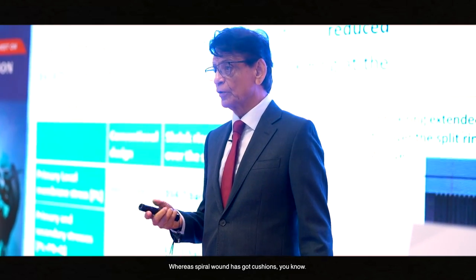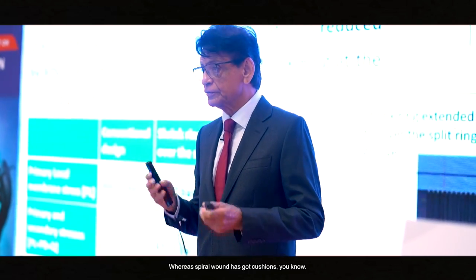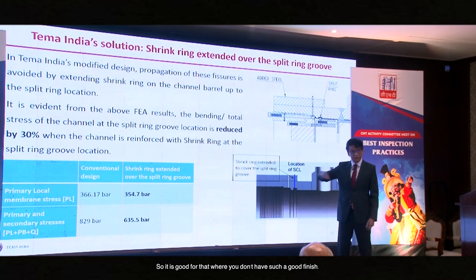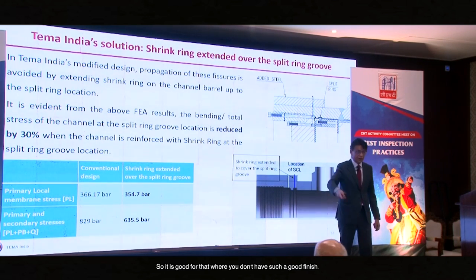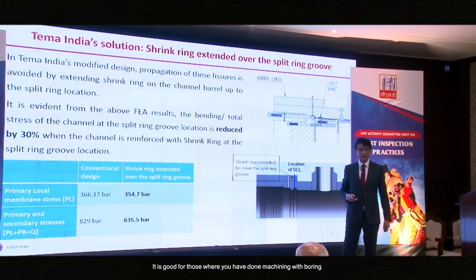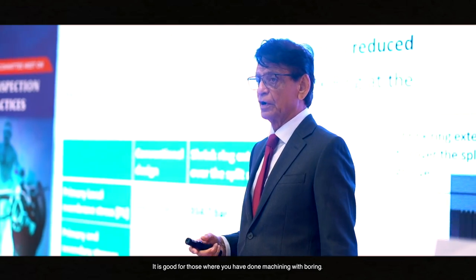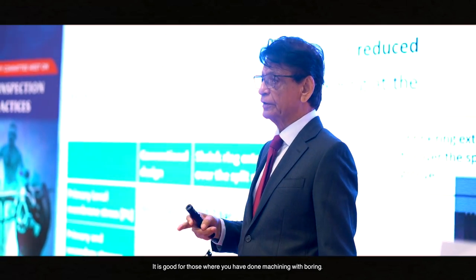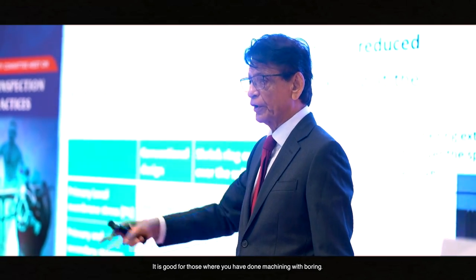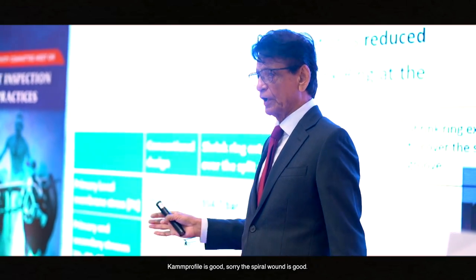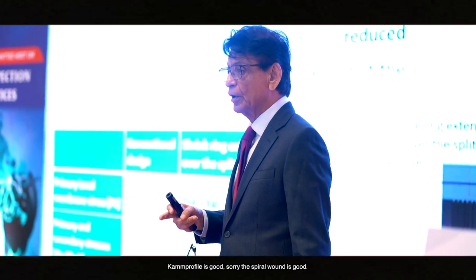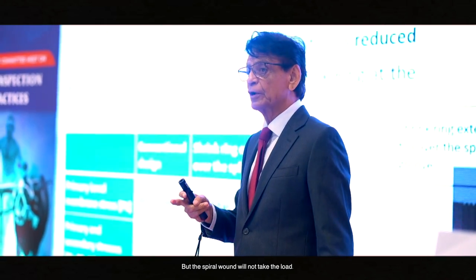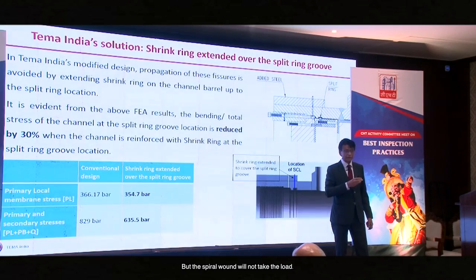If we are making this leak proof, the shrink ring is extended beyond this notch — as you can see. As a result it is much safer. Even if fissures do propagate, they cannot go beyond the shrink ring.